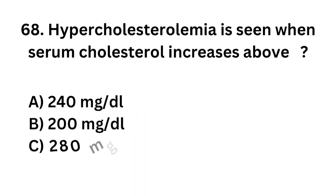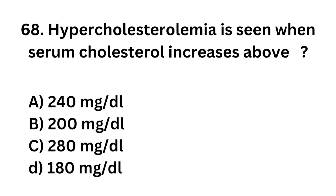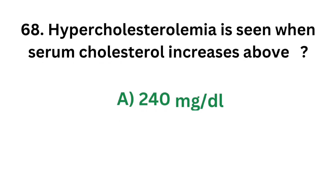Question number 68. Hypercholesterolemia is seen when serum cholesterol increases above: Option A - 240 mg/dL; Option B - 200 mg/dL; Option C - 280 mg/dL; Option D - 180 mg/dL. The correct answer is Option A, 240 mg/dL. A serum cholesterol level of 240 mg/dL indicates hypercholesterolemia.